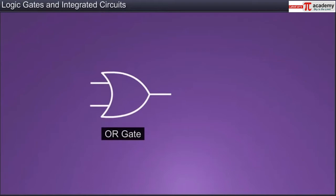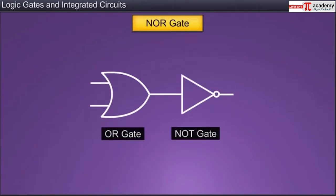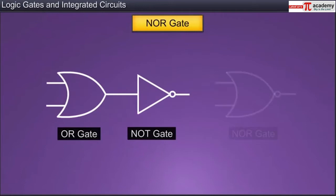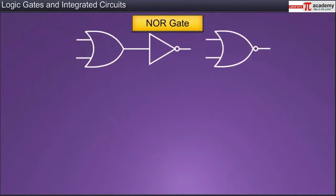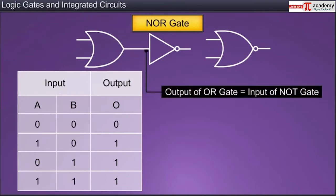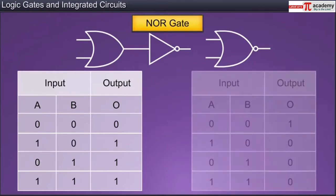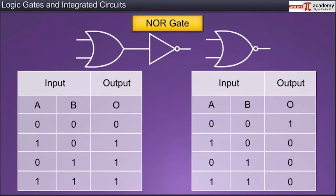An OR gate followed by a NOT gate forms a NOR gate. The symbol for a NOR gate is a combination of symbols of the OR and NOT gates. In a NOR gate, the output of the OR gate acts as the input for the NOT gate and thus gets inverted. The input values in the truth table of a NOR gate are taken from the input values of the OR gate table. The output of the OR gate is inverted by the NOT gate and appears as the output of the NOR gate.